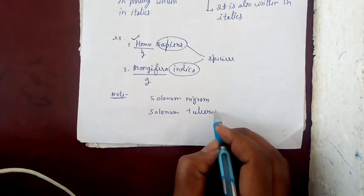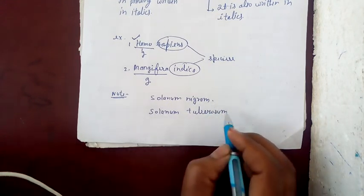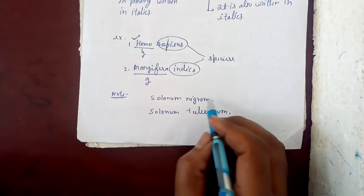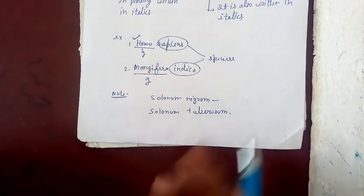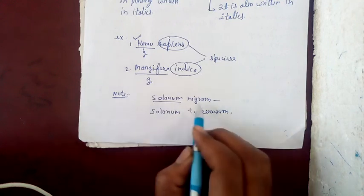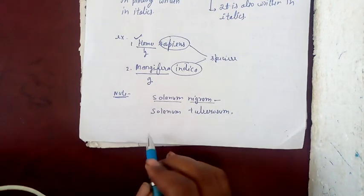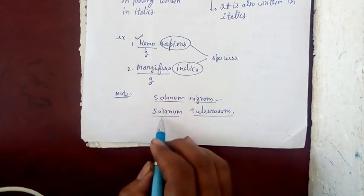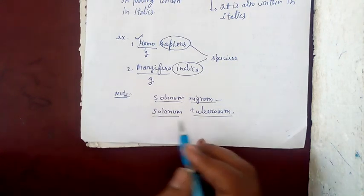Solanum tuberosum. Solanum nigram is the scientific name for a plant we call rasbhari. Solanum is the genus, nigram is the species. Solanum tuberosum is another plant's name.